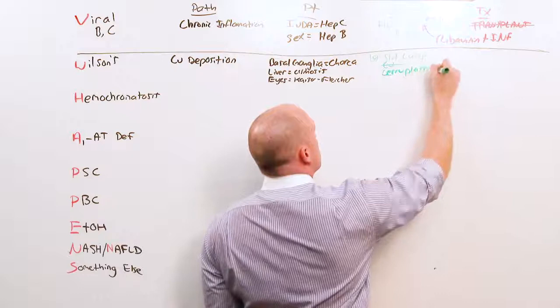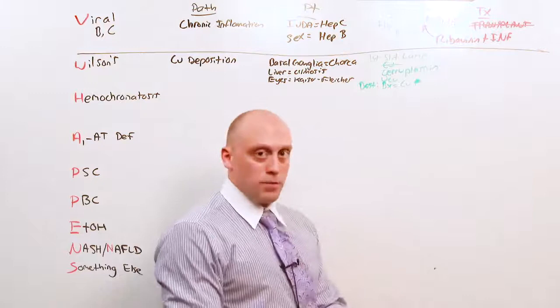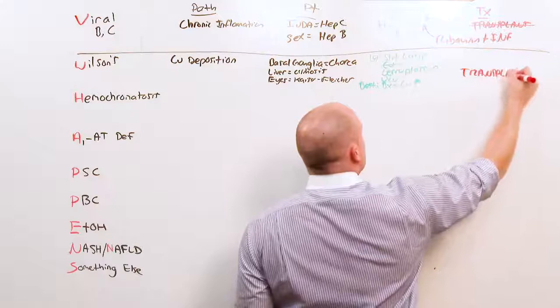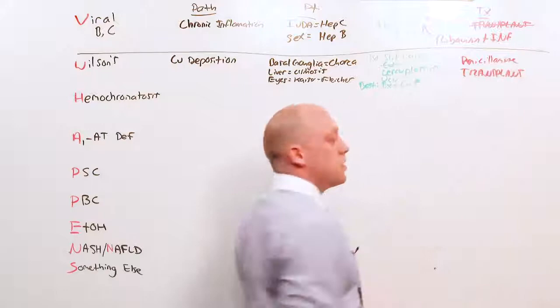Instead, what you can do is check ceruloplasmin or a urinary copper. But the best test is going to be a biopsy, which shows you an increased copper. This is a disorder of the liver. So if you transplant it, you reverse the disease. But sometimes all you want to do is get rid of the copper. You can get rid of copper with penicillamine. So while they're waiting for a transplant, treat the copper overload.